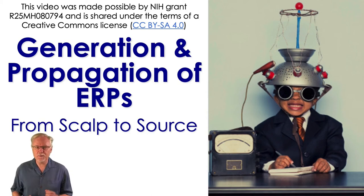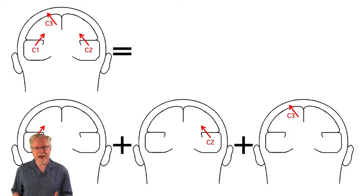In this video, I'm going to discuss how multiple ERP generator sources combine together in our scalp electrodes. The key underlying concept is that when you have multiple voltages passing through a conductor at the same time, they simply sum together.